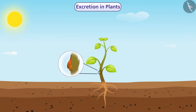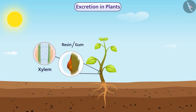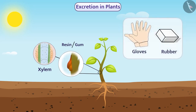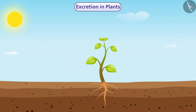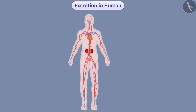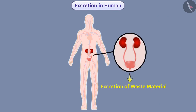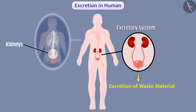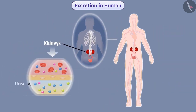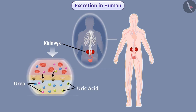Some waste products are stored in old xylem in the form of resin and gum. Waste products like resin and gum are very useful to humans. In humans, excretion of waste material is done with the help of the excretory system. A pair of kidneys located on the back side of the abdomen separate nitrogenous waste — urea and uric acid — from the human blood by the process of filtration.